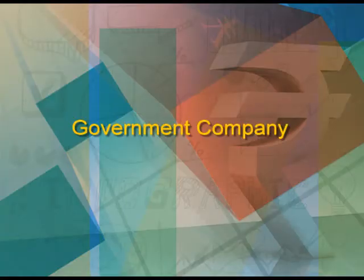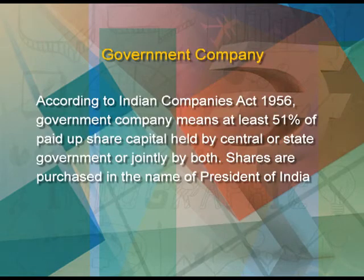The last important form of public enterprise is the government company. According to the Companies Act 1956, a government company is one where at least 51 percent of paid-up capital is held by the central or state government, or jointly by both. In this session we discussed public enterprises — their rationale, importance, and the first two major forms: departmental undertakings and statutory corporations. The next session will cover government companies in detail, including their advantages, disadvantages, and most suitable applications.